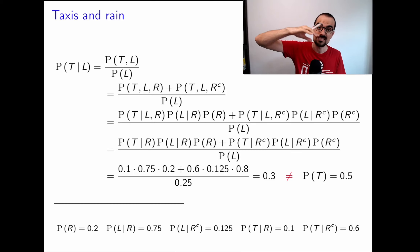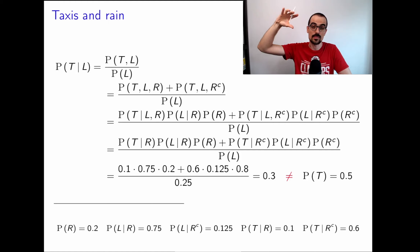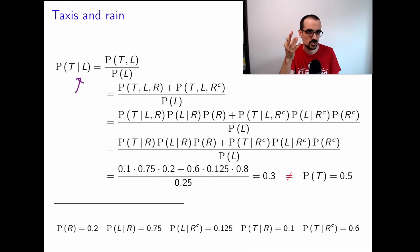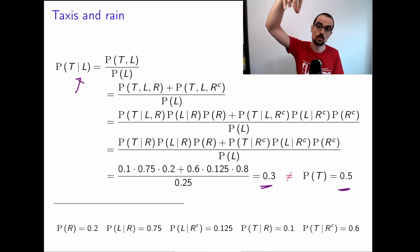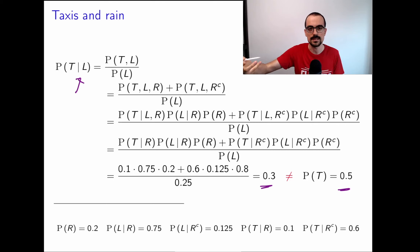This shows that conditional independence does not necessarily imply independence. It's true the plane isn't affected by taxis, but there's a third phenomenon — rain — that affects both. Knowing the plane was late tells us it probably rained (via Bayes' rule), and if it rained, there will be fewer taxis. So because of this common cause, taxis and late are not independent, even though they're conditionally independent given rain.